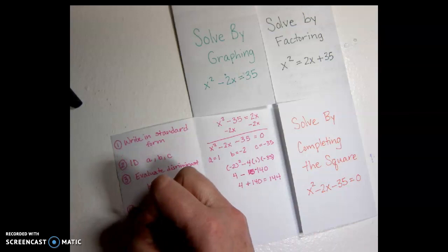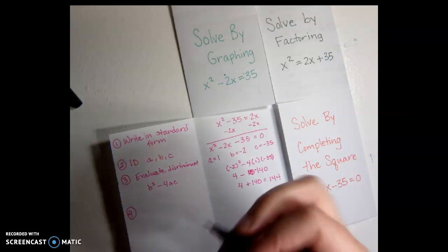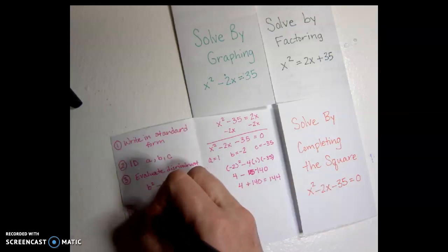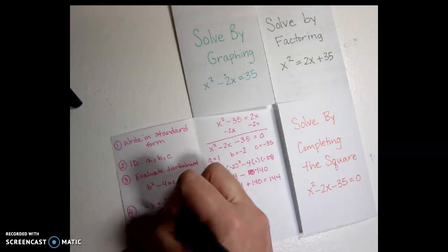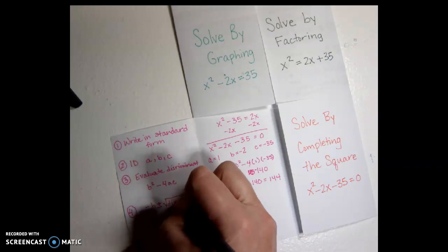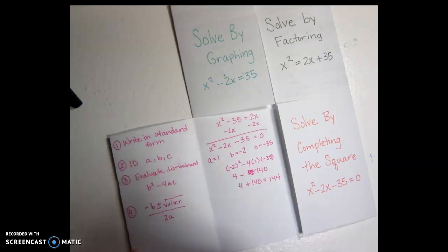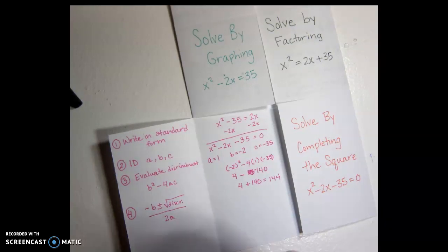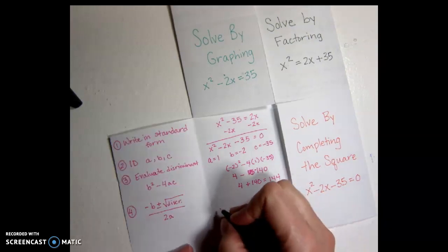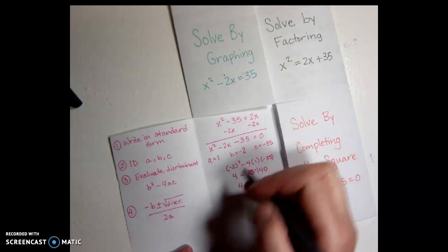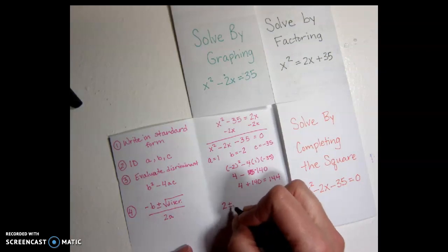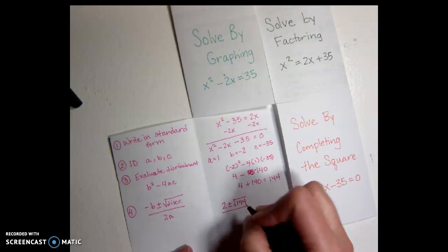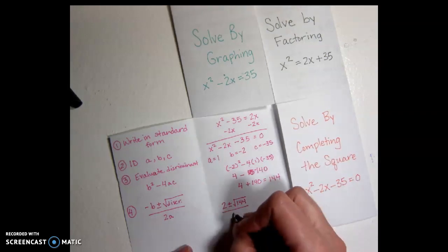All right, and then the next step is going to be the rest of the quadratic formula, which is opposite of b plus or minus the square root of the discriminant, all over 2a. So this is a two-part problem, there's a plus and there's a minus. So I'm going to write it out. Opposite of b, since it's negative 2, would be positive 2 plus or minus the square root of 144 over 2 times a. a is 1, so that'd be over 2.